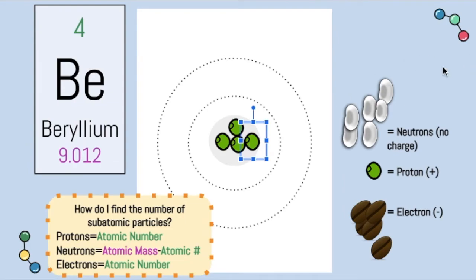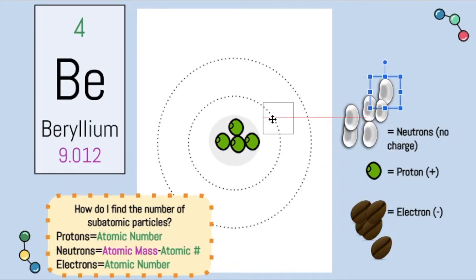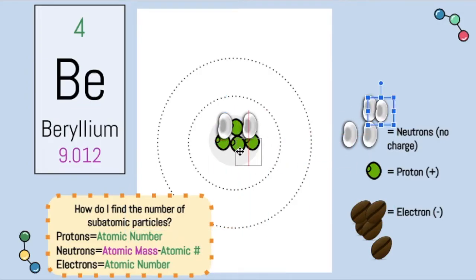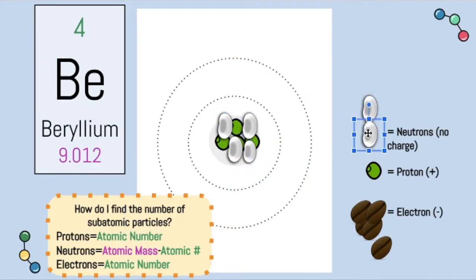The next subatomic particle is the neutrons. If we look at the cheat sheet, neutrons equal atomic mass minus atomic number. The atomic mass is nine, and the atomic number is four — I'm rounding to the nearest whole number — so nine minus four is five. Neutrons are represented by these white lima beans, so I'm going to put five in: one, two, three, four, five. So I've got my neutrons and my protons in the nucleus of my atom.